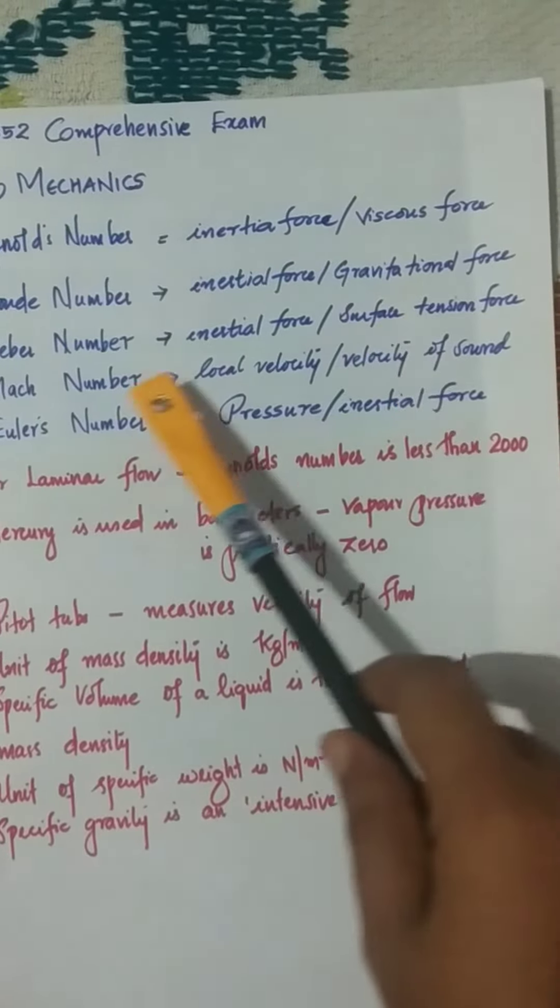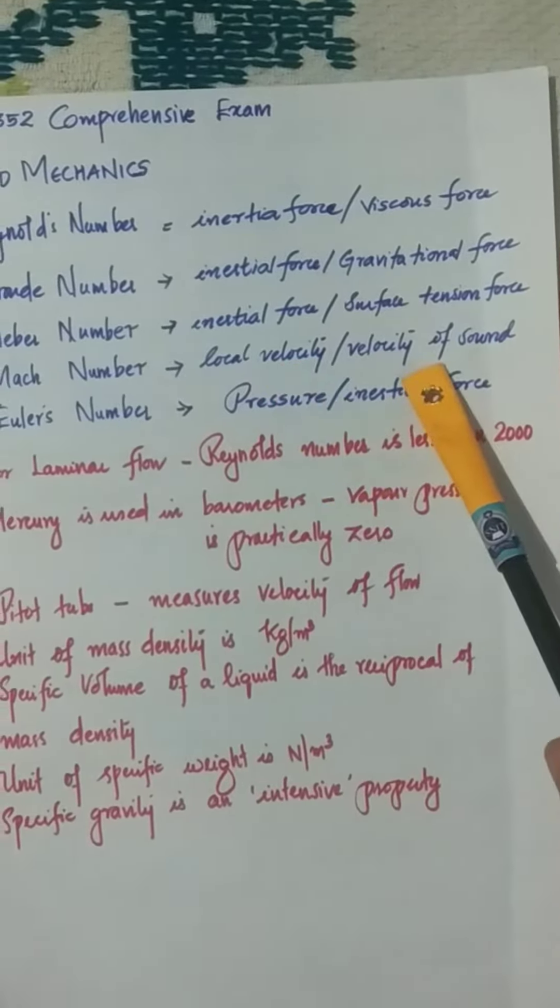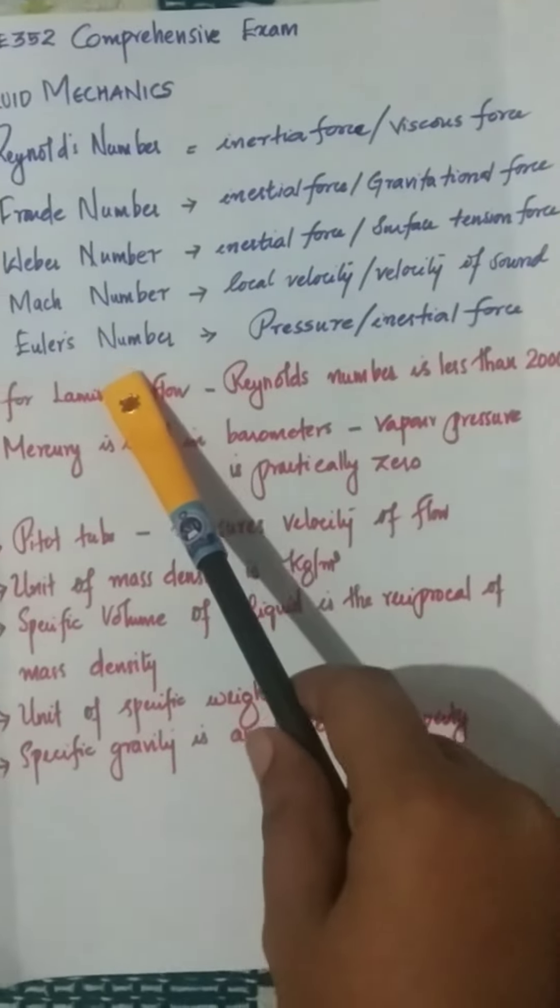Mach number is the ratio of local velocity to velocity of sound, and Euler number is the ratio of pressure to inertia force.